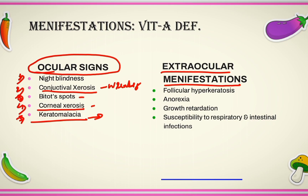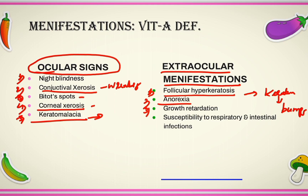Let's discuss the extraocular manifestations due to vitamin A deficiency. The first one is follicular hyperkeratosis, a condition where there is development of keratin over the hair follicles, ultimately causing bumps over the skin. The next conditions include anorexia — a decrease or loss of appetite — growth retardation in children, and increased susceptibility to respiratory and intestinal infections in children.